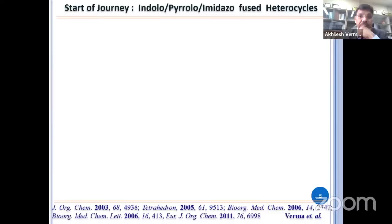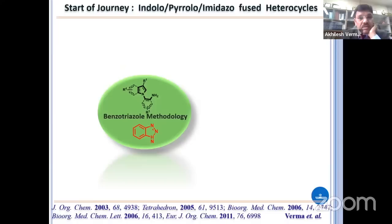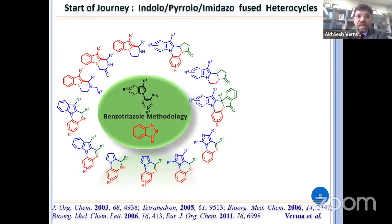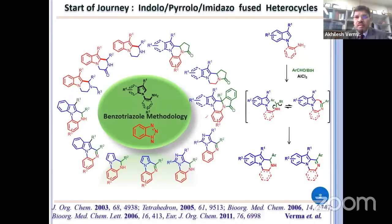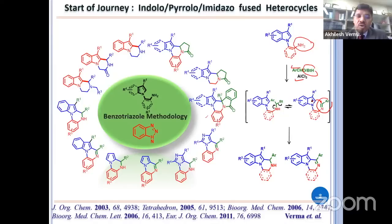The start of the journey: when I did my postdoc with Kedraski, I learned benzodiazole chemistry. It is very simple chemistry. Look here — what we have used: this amine, aldehyde, and benzodiazole, and a Lewis acid. The basic chemistry: indole and pyrrole are electron-rich in nature at the two position when the three position is blocked. Close proximity is also very important for making the bond. This is what I designed.